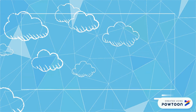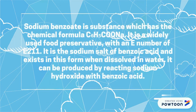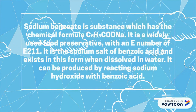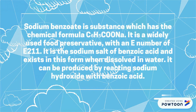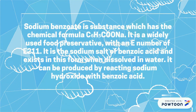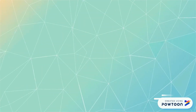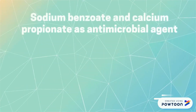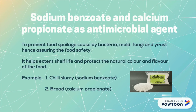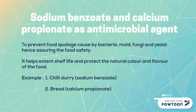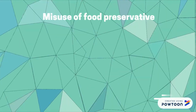More about sodium benzoate. Sodium benzoate, with chemical formula C6H5COONa, is produced by reacting sodium hydroxide with benzoic acid. Sodium benzoate and calcium propionate act as antimicrobial agents to prevent food spoilage and help extend shelf life.